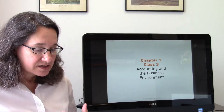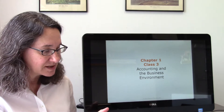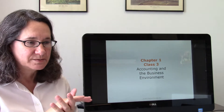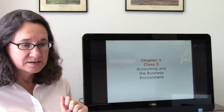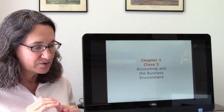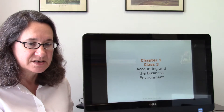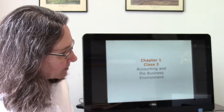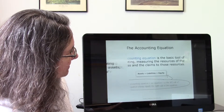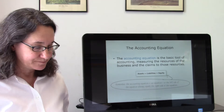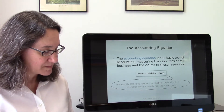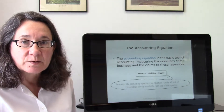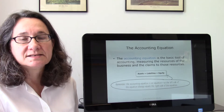We're going to start doing some accounting, and the first thing we need to understand is what we call the accounting equation. This is the basis for everything we do. All the transactions we record are recorded so that this equation stays in balance. The accounting equation is: Assets equals Liabilities plus Owner's Equity — A equals L plus E.